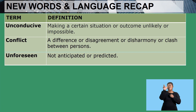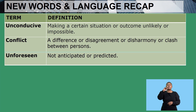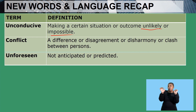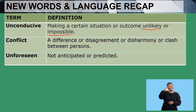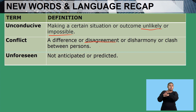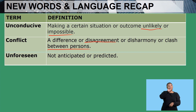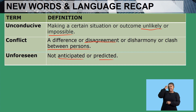The new words that you have come across in this lesson: 'unconducive,' which means making a certain situation or outcome unlikely or impossible. We also have the word 'conflict,' which is a difference, disagreement, disharmony, or clash between persons. We also have the word 'unforeseen,' which means not anticipated or predicted.